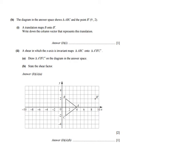This is a past paper question, so all credit goes to Cambridge Examinations. It says the diagram in the answer space shows triangle ABC. So we have triangle ABC, and they give point B apostrophe. That apostrophe always means that is the image point — so after the transformation — with the coordinates 9, 2.